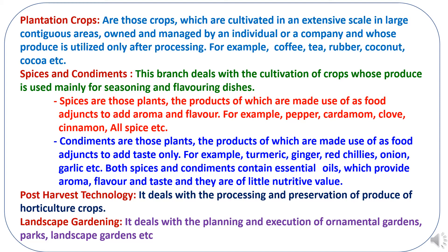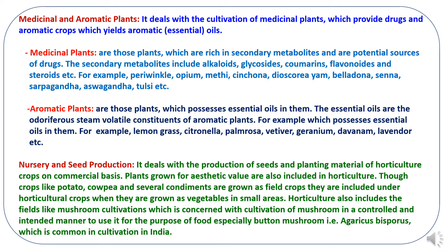Then landscape gardening, which deals with the planning and execution of ornamental gardens, parks, landscapes and gardens etc. The next division of horticulture crops is medicinal and aromatic plants. It deals with the cultivation of medicinal plants which provide drugs, and aromatic crops which yield aromatic essential oils.